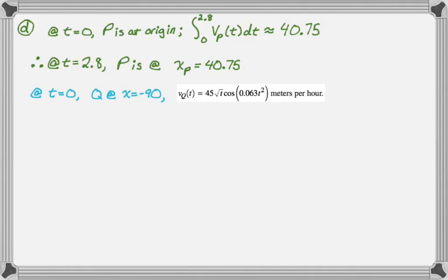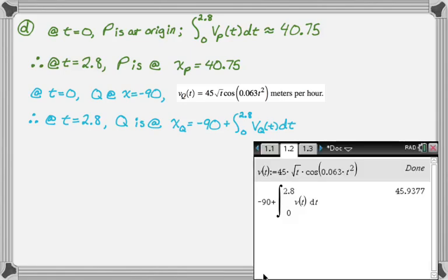Now what we want to do is figure out where this thing is at t equals 2.8. So Q is going to be at xQ equals where it starts, which is negative 90, plus its displacement. And displacement will be the integral from zero to 2.8 of vQ. Using a calculator, we get that that value is 45.9377, so that's approximately this.